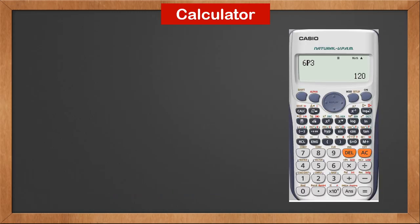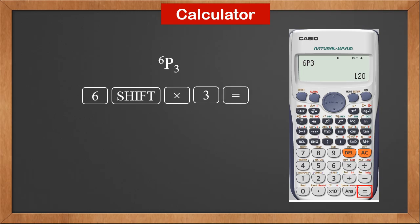Let's see how to use the calculator to calculate permutation. We can see that above the multiplication button, there's the NPR sign. We are going to calculate 6P3. So we hit 6 first, then the shift button, and the multiplication button, then 3, and equal. Now the display is 6P3 and the result is 120.